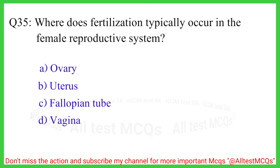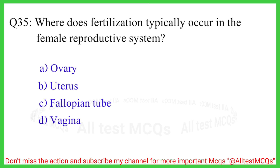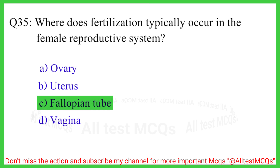Question number 35. Where does fertilization typically occur in the female reproductive system? The correct answer is option C, fallopian tube.